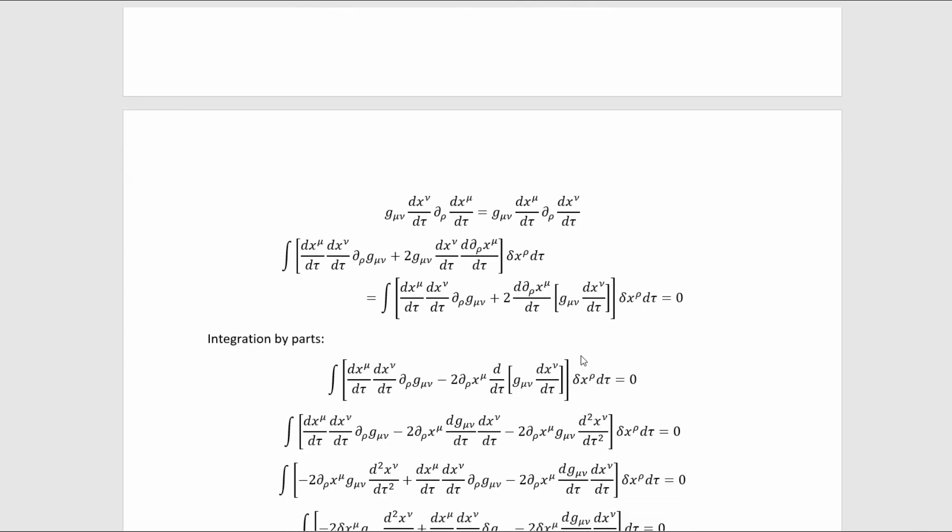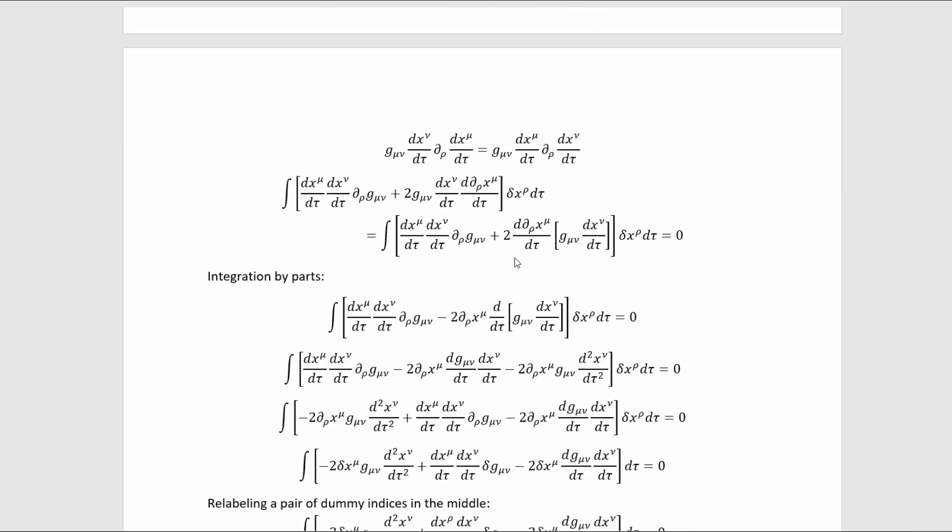The next thing I did was just reorder some factors in this last term here in order to prepare it for integration by parts. Then what I did is I moved this d over d tau that's applied to the delta rho x mu here, and I moved it over to this thing in parentheses, which got me here. And that, of course, because it's integration by parts, comes at the cost of a minus sign.